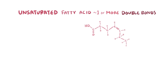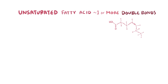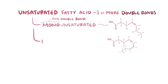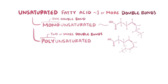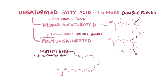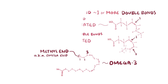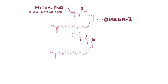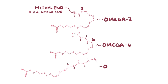Unsaturated fatty acids can be further classified according to the number of their double bonds. Monounsaturated fatty acids are unsaturated fatty acids with just one double bond. Polyunsaturated fatty acids have two or more double bonds. They can also be classified according to their location. The methyl end is called the omega end, and we count the number of carbons until the first double bond. If that number is three, it's an omega-3 fatty acid. If the double bond is six carbons from the end, it's an omega-6, and if it's nine carbons from the end, it's called omega-9.